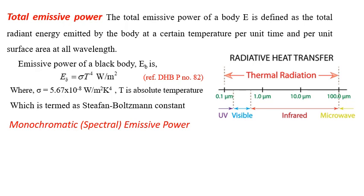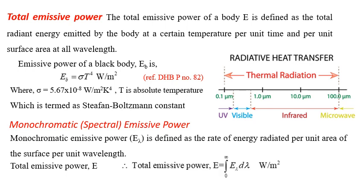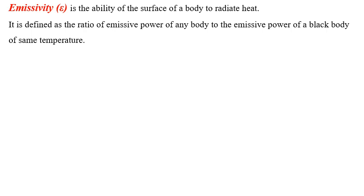The spectral or monochromatic emissive power is the amount of radiation energy emitted from a surface at a given temperature, which varies with wavelength. Monochromatic emissive power E_λ is defined as the rate of energy radiated per unit area of the surface per unit wavelength. The total emissive power E equals the integral from 0 to ∞ of E_λ dλ (W/m²). The emissive power from a real surface is given by E = ε·σ·T⁴.